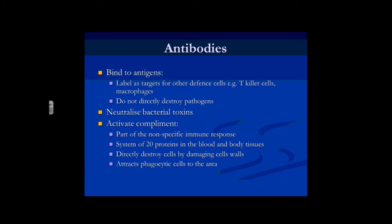Antibodies also help neutralise bacterial toxins, and they activate something called complement. Complement is part of the non-specific immune response — basically a whole series of proteins, like a cascade similar to the coagulation cascade. A series of proteins already found in the blood that, when activated in the presence of antibodies, come together to directly destroy the antigen itself — without needing any cell activity. It's doing exactly what the name suggests: complementing the specific immune system responses, whether cell-mediated or humoral. But it only occurs in the presence of antibodies.